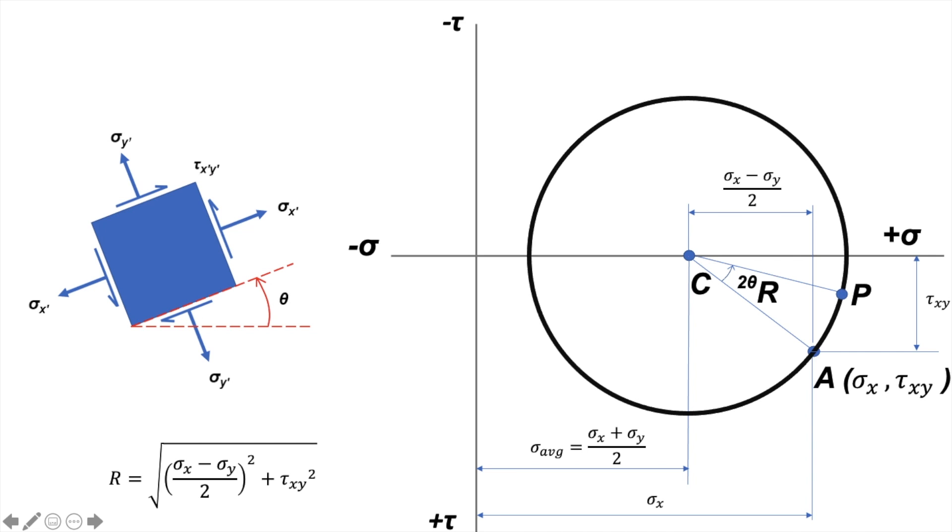Once that is done, mark a point P. The distance from the origin to P along the normal axis is sigma x prime, and the vertical distance from the x-axis to point P is the transformed shear tau x prime y prime. And when we extend P to Q through C, we get another point on the Mohr circle which is sigma y prime. It is as easy as this.